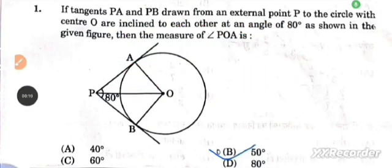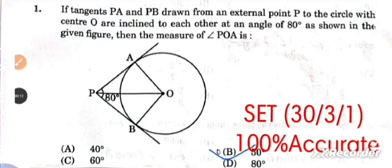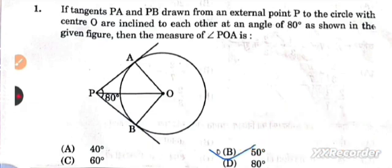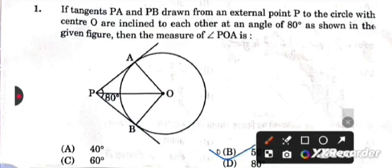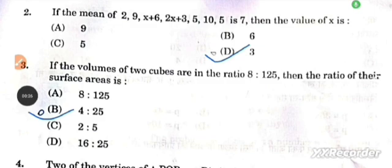First question: If tangents PA and PB drawn from an external point P to the circle with center O are inclined to each other at an angle of 80 degrees as shown in the given figure, then the measure of angle POA is 50 degrees.